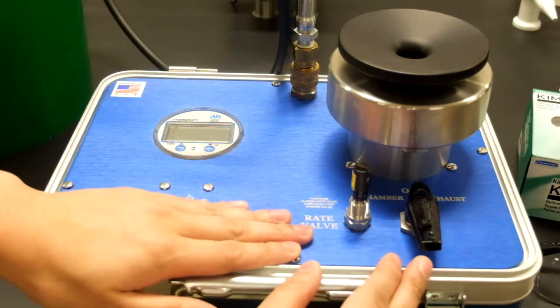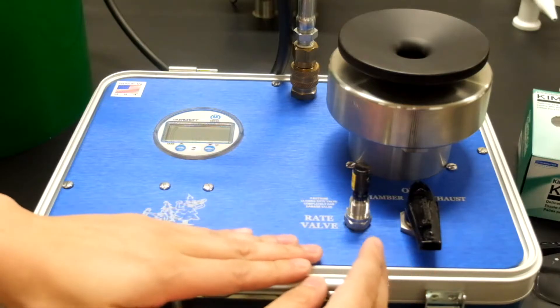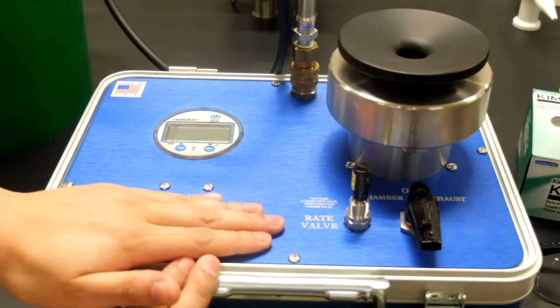Over here at the bottom right we have two valves. The valve on the left is the rate valve which adjusts the rate of nitrogen gas pressurizing the chamber.